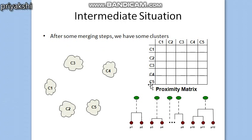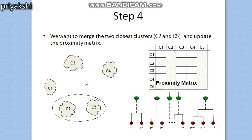You have to update the proximity matrix at each iteration. In the next iteration, again we are going to merge the two clusters that are closest to each other.